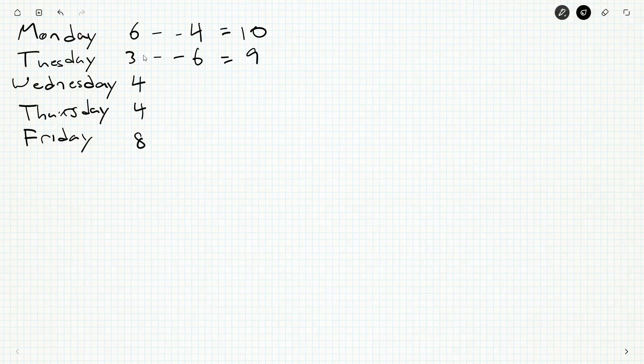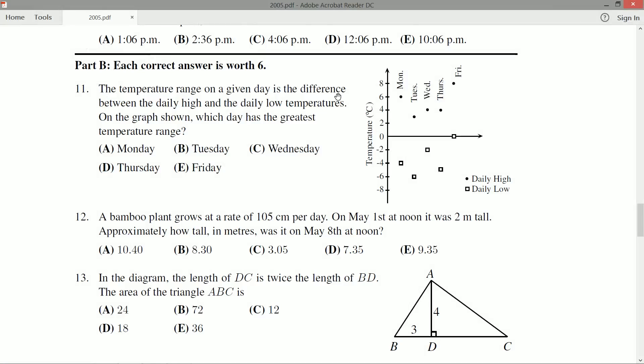Four, four, and eight, and then we subtract off the low from each. The difference between the high and the low.